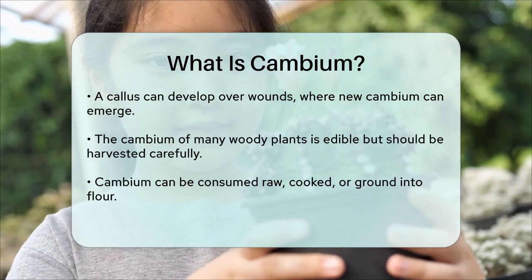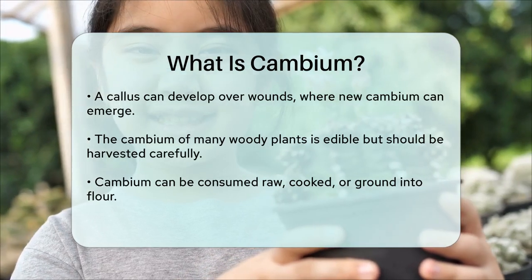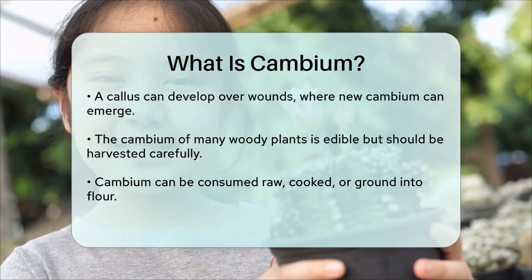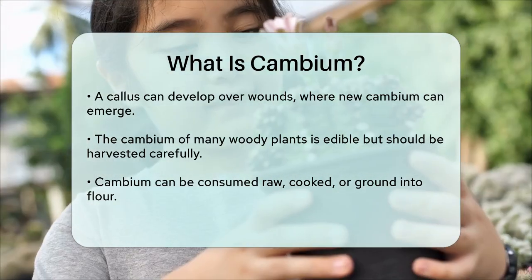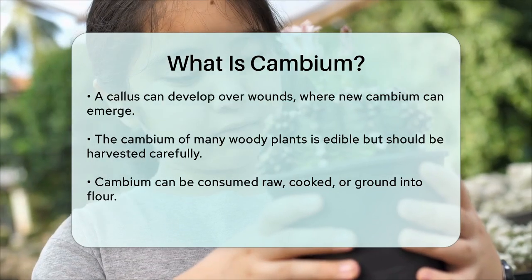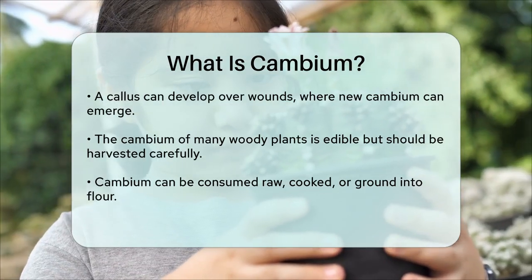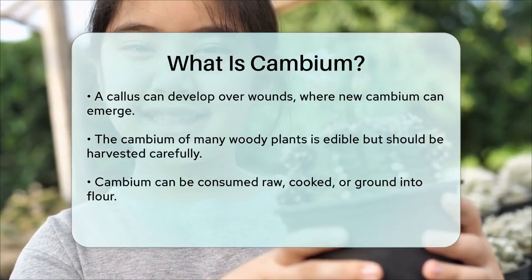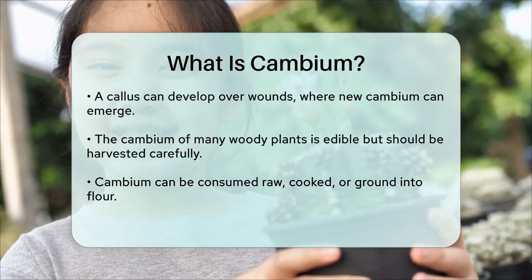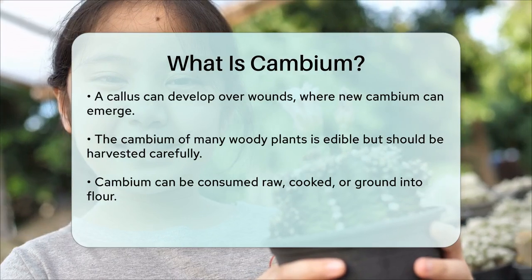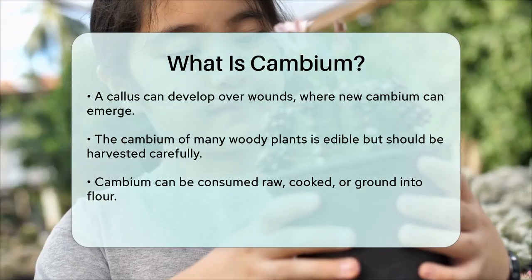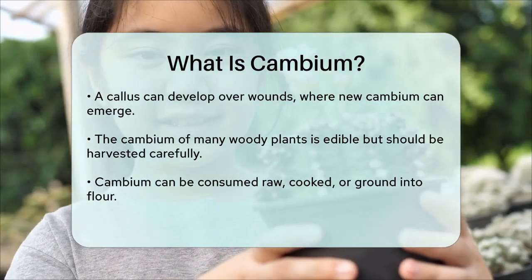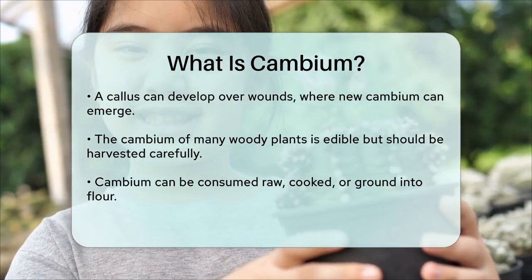So to sum it up, cambium is a vital layer of cells in plants that drives their growth and development, allowing them to grow thicker and heal from injuries. It's a fascinating part of plant biology that helps us understand how plants thrive and adapt.